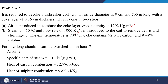In the second step, steam at 450 degree centigrade and flow rate of 1,000 kg per hour is introduced to remove debris and clean up. The exit temperature is 700 degree centigrade. Coke contains 92% carbon and 8% sulfur. For how long should steam be switched on? Specific heat of steam is 2.13 kJ per kg per degree centigrade, heat of carbon combustion is 32,770 kJ per kg, and heat of sulfur combustion is 9,300 kJ per kg.